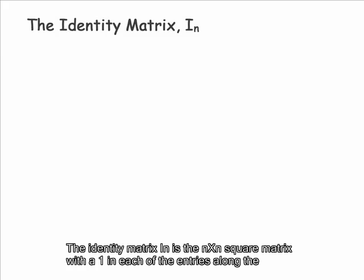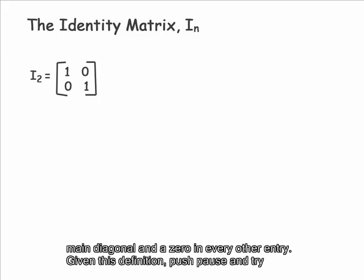The identity matrix I sub n is the n by n square matrix with a 1 in each of the entries along the main diagonal and a 0 in every other entry.